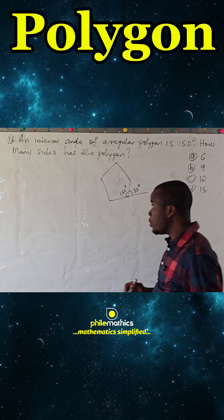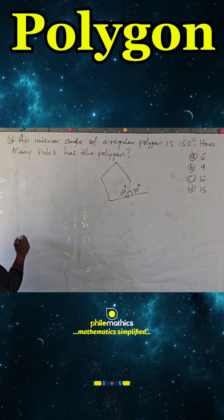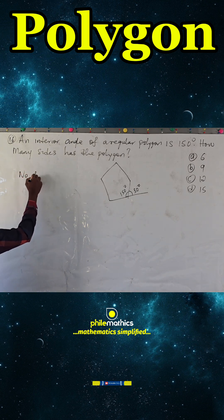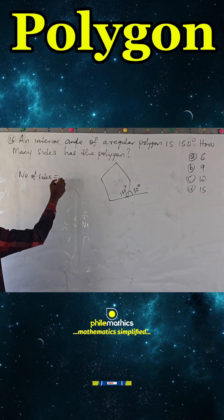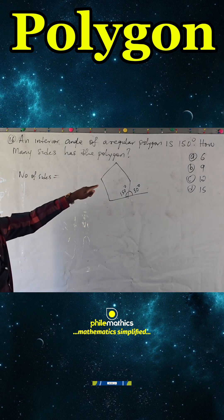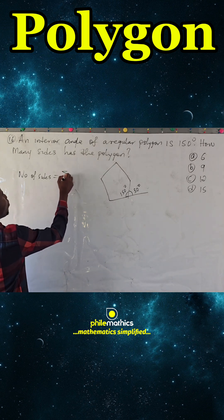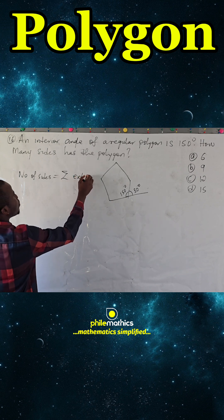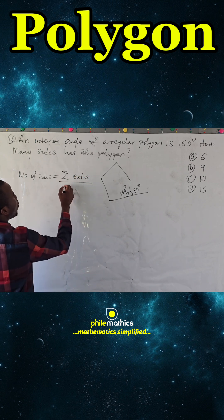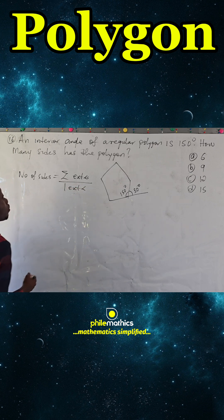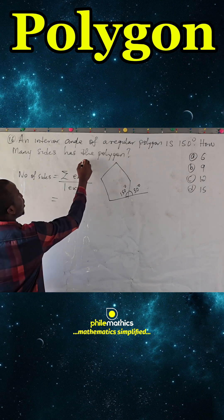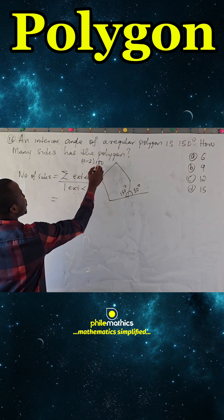Having gotten this, we now recall that number of sides can be gotten as the sum of the exterior angle of a regular polygon over one exterior angle. That means sum of the exterior angle over one exterior angle. Now, the sum of the exterior angle of a regular polygon is 360, just like the sum of the interior angle of a regular polygon is n minus 2 times 180.